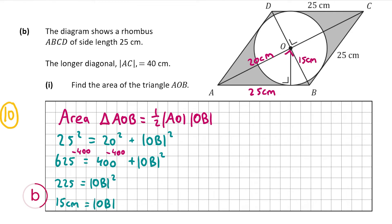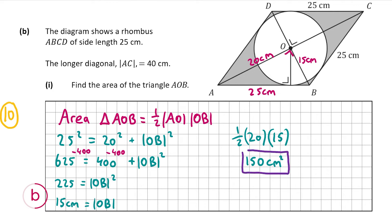Now that we have OB and AO, we can work out the area of the triangle. It's going to be half times AO times OB — so half of 20 times 15 — which gives 150 centimeters squared. That's the answer to B part 1.